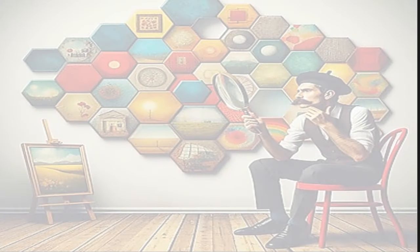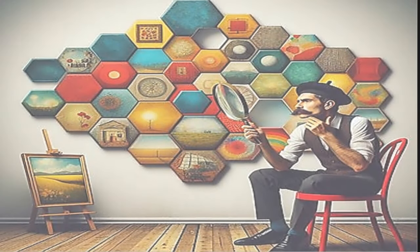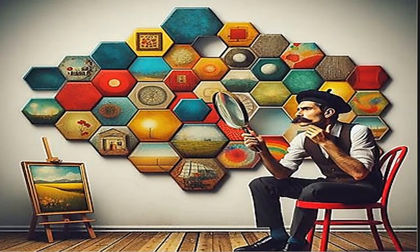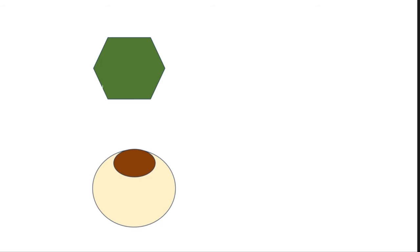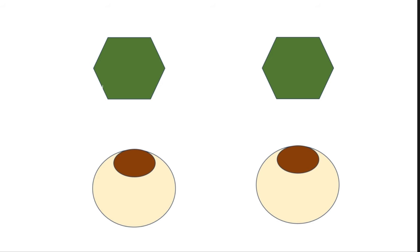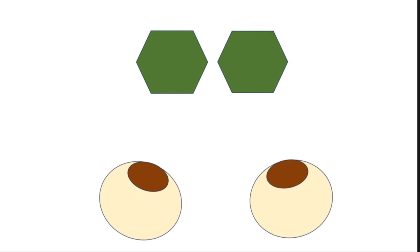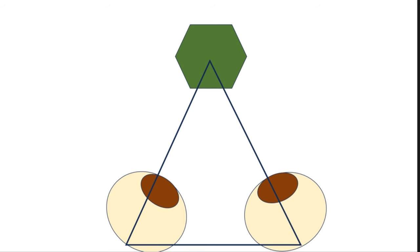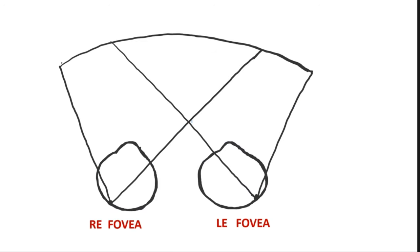Imagine a man sitting on a chair looking at a hexagon. With his left eye closed, he perceives one hexagon, and with his right eye, he perceives another hexagon. However, when he looks with both eyes, he still perceives the hexagon as a single hexagon, despite the two eyes making two individual images on their respective retinas. This is the concept of binocular single vision.